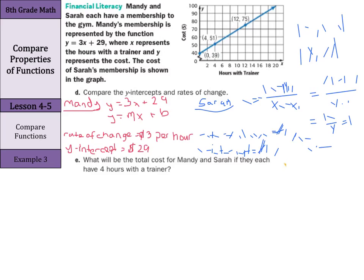Now, what will be the total cost for Mandy and Sarah if they each have four hours with the trainer? Well, in Mandy's case, we're given the equation y equals 3x plus 29. And so, we can substitute in the 4. y equals 3 times 4 plus 29. 3 times 4 is 12 plus 29. y equals 41. So, Mandy pays $41.